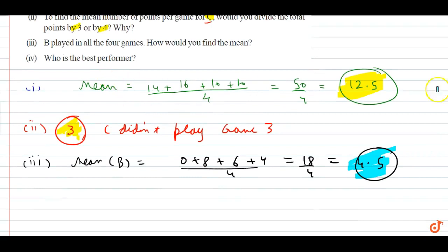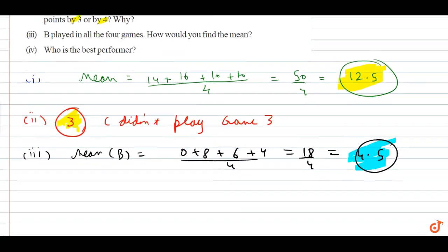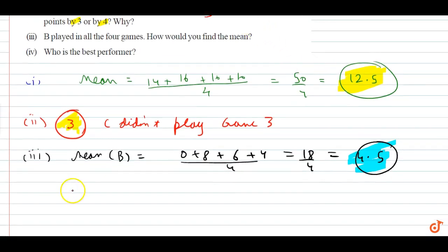Last part is, who is the best performer? So you have to find C's mean as well for that. Mean of C is